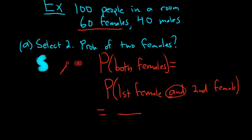There are 60 females, so there are 60 ways to pick a female. And there are 100 people, so 100 ways to pick a person. So the probability that the first person is a female is the number of ways to pick a female over the number of ways to pick a person times.